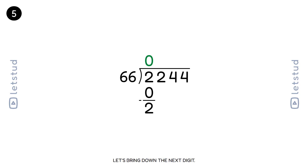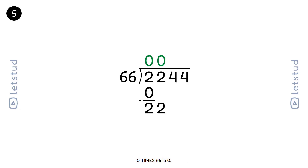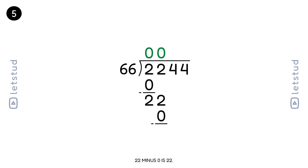Let's bring down the next digit. We have a remainder of 2 and bring down the 2 to make 22. 66 fits into 22 zero times. 0 times 66 is 0. 22 minus 0 is 22.